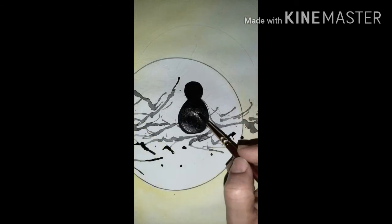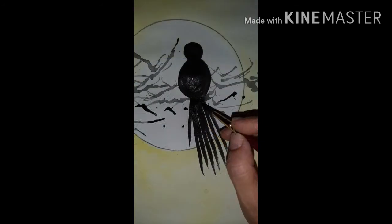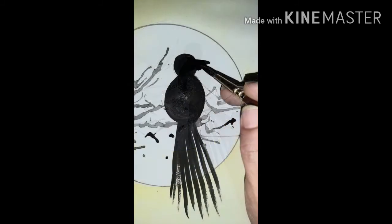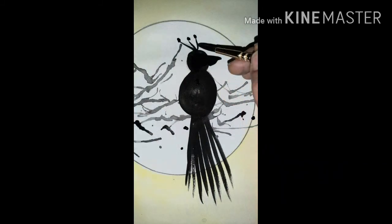Make straight standing lines attached to its body for its tail and draw two triangular shapes on the head of the bird for its beak. The crown to be made on its head.